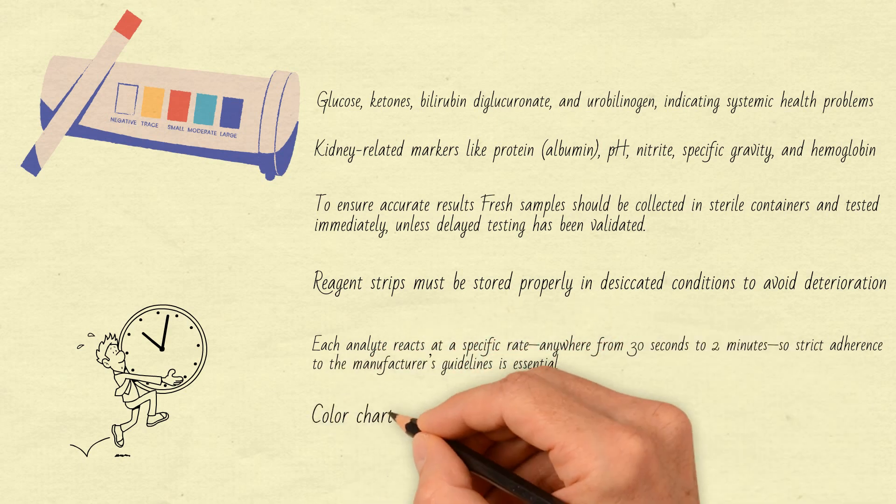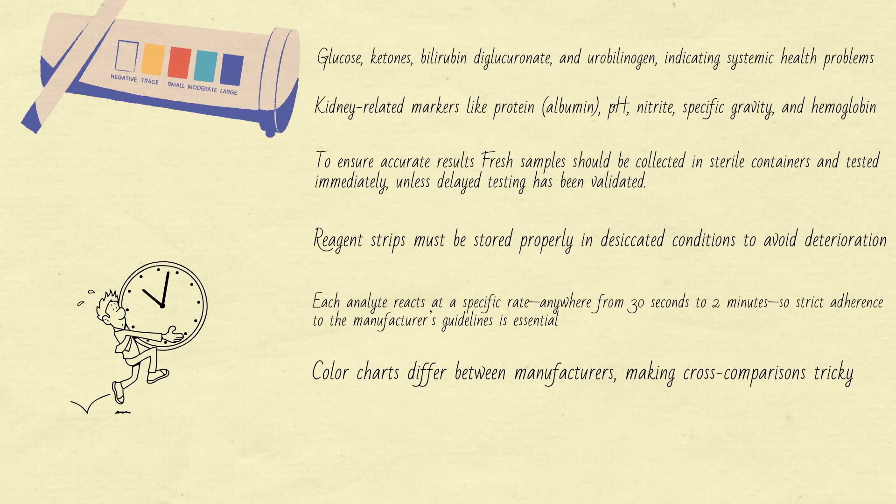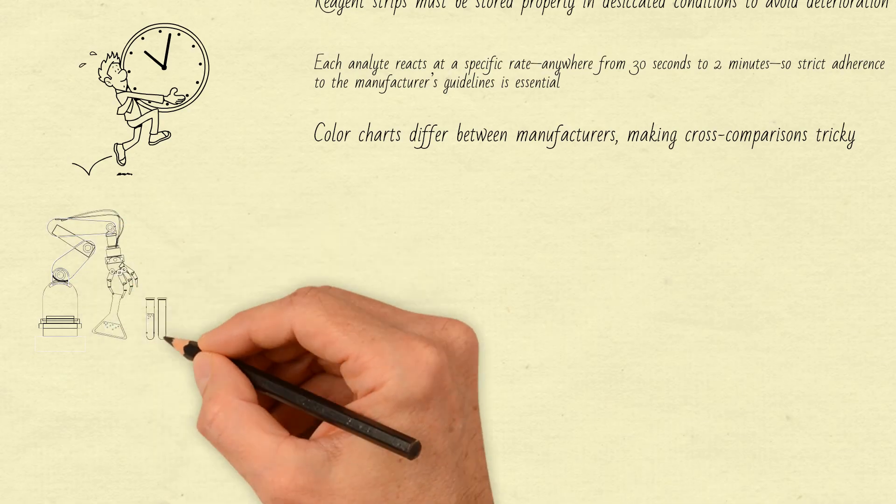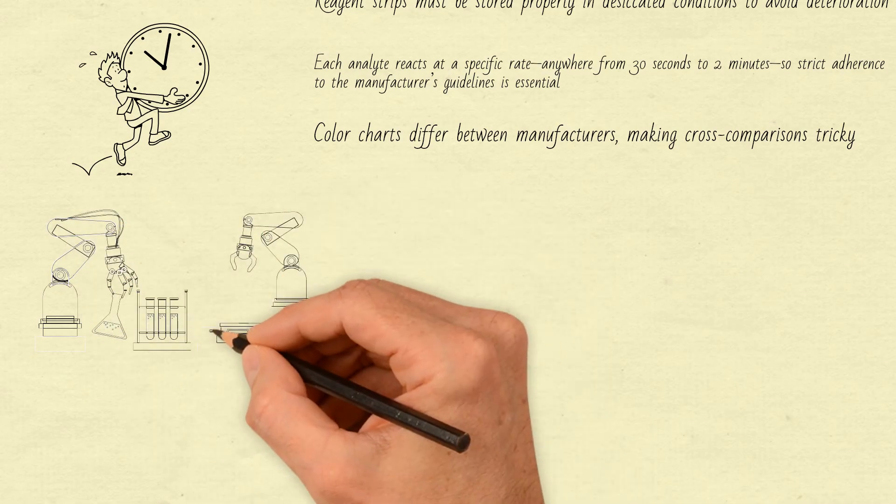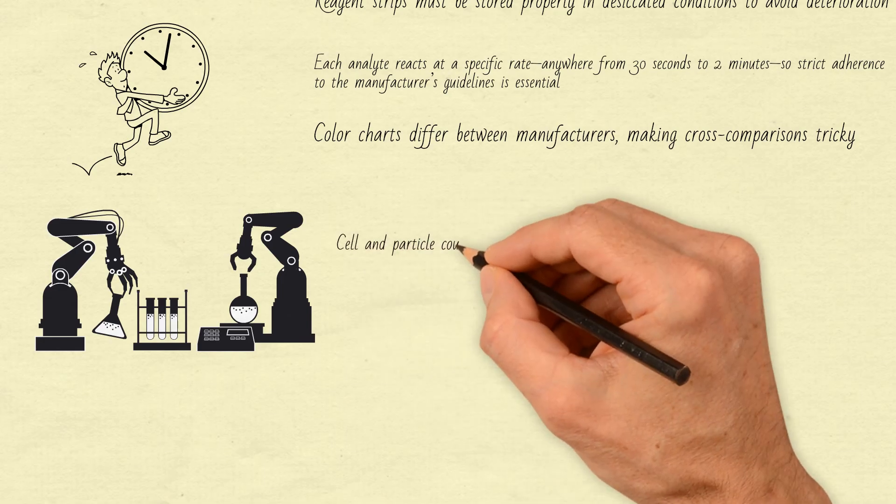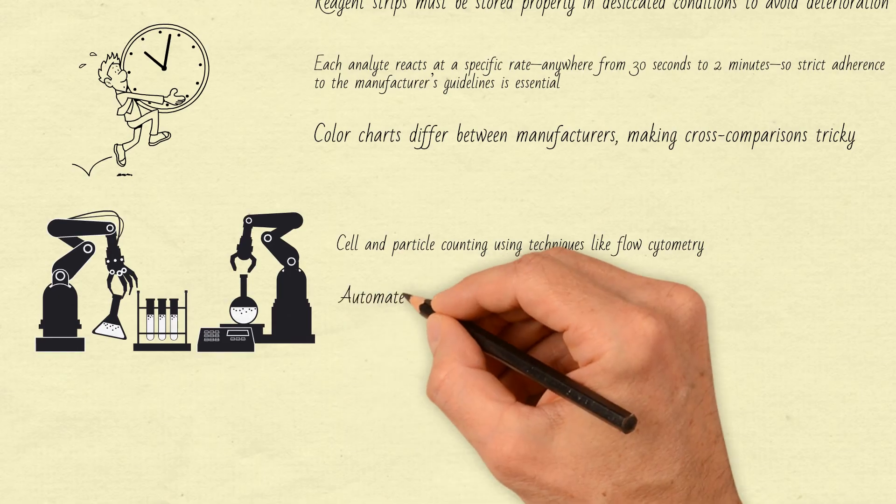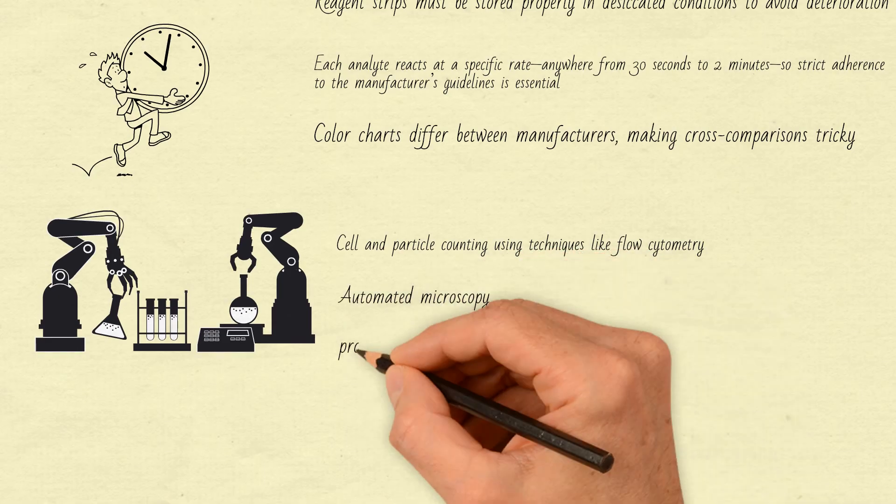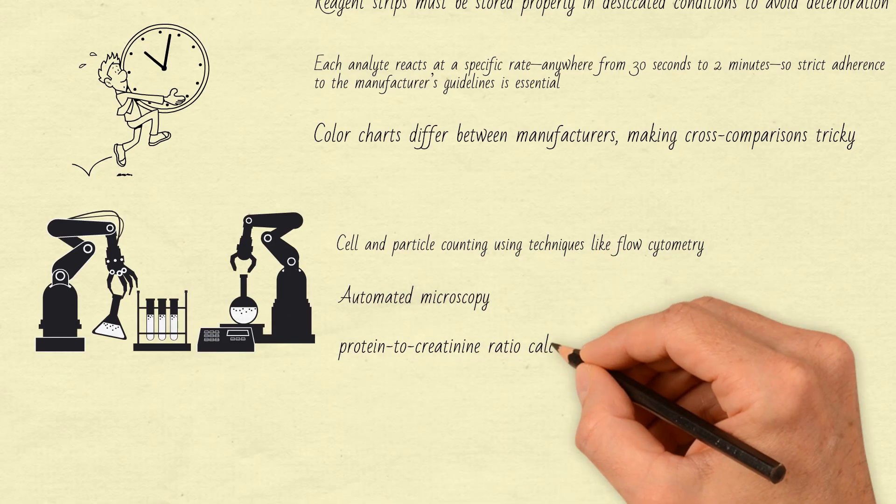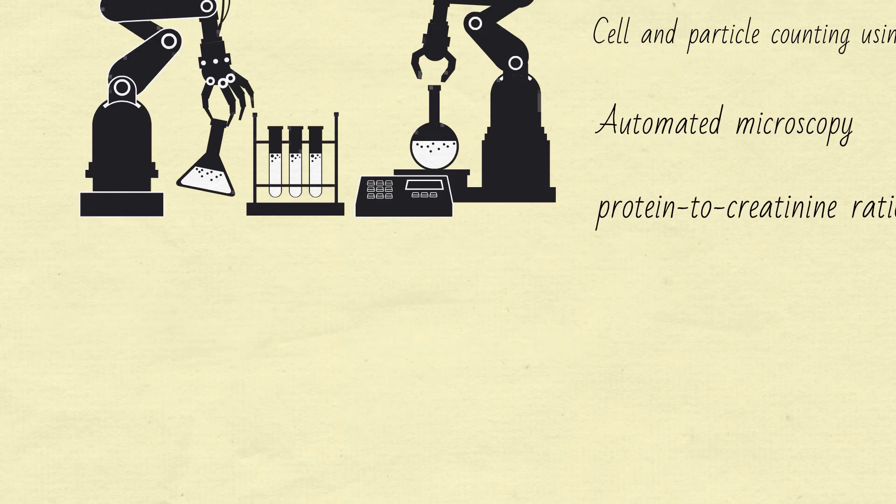Color charts differ between manufacturers, making cross-comparisons tricky. To minimize variability and improve precision, automated devices are often used. These advanced systems offer features like cell and particle counting using techniques like flow cytometry, automated microscopy, and protein-to-creatinine ratio calculations. Results from automated systems are presented on a continuous scale, providing more accuracy compared to manual readings.